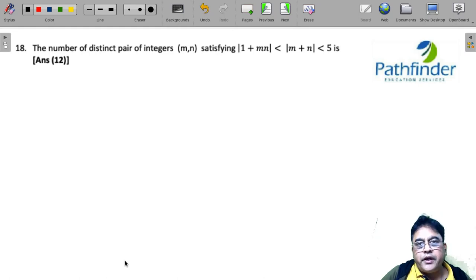CAT 21, slot 3, question number 18, quantitative aptitude. The number of distinct pairs of integers m, n satisfying |1+mn| < |m+n| < 5. This is your question.